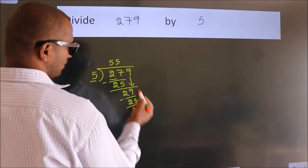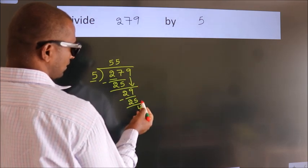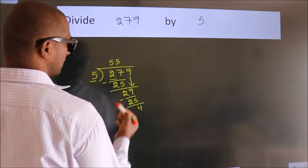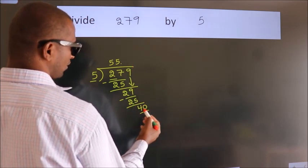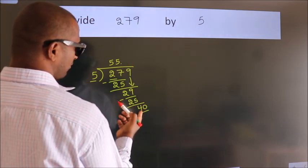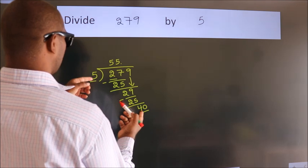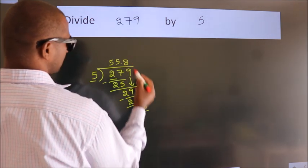After this, no more numbers to bring down. So what we do is we put a dot and take 0, so 40. When do we get 40 in the 5 table? 5 times 8 is 40.